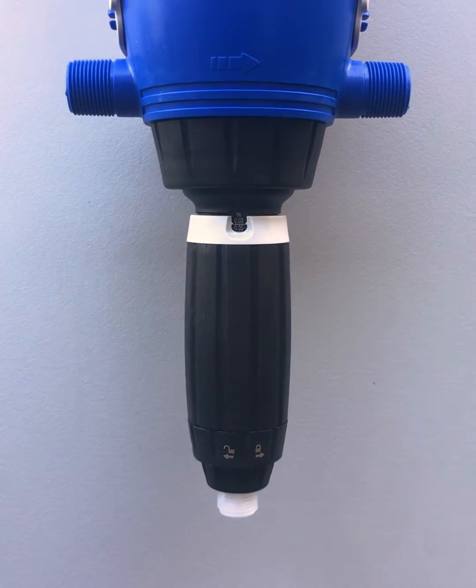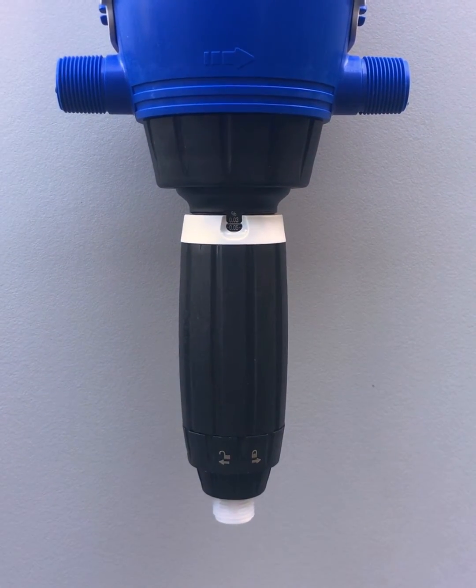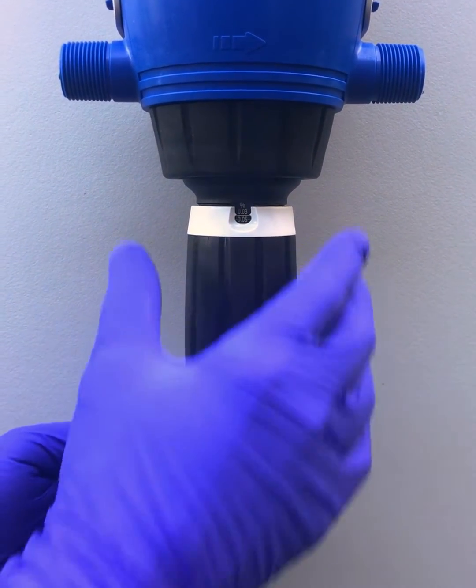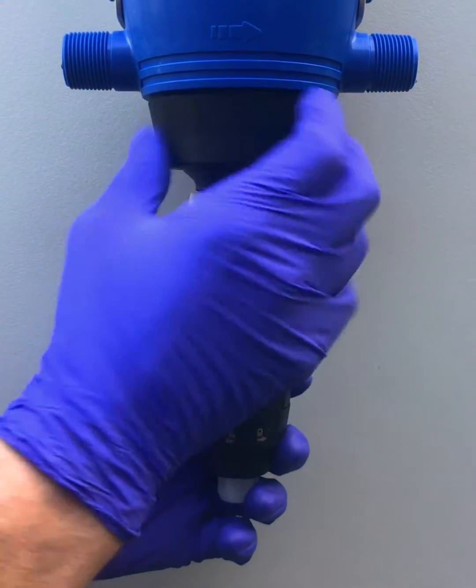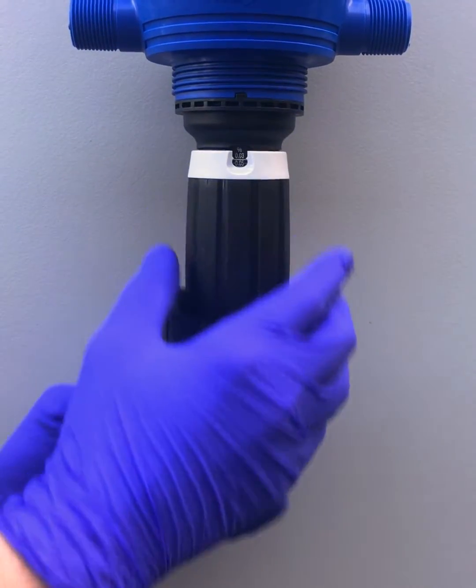First we're going to show you how to change the reading on your injection scale. First you're going to locate and loosen the injection stem assembly nut from the unit.